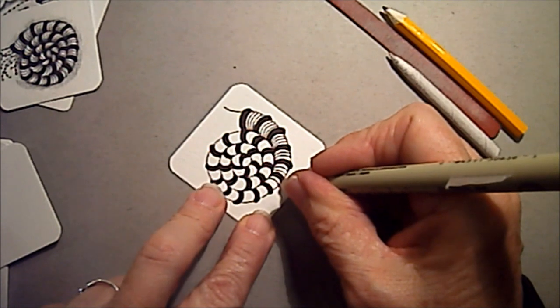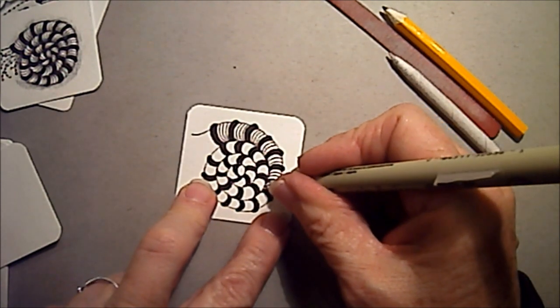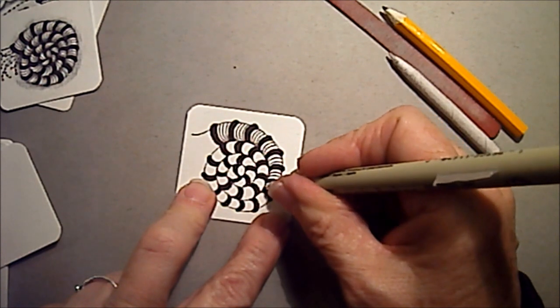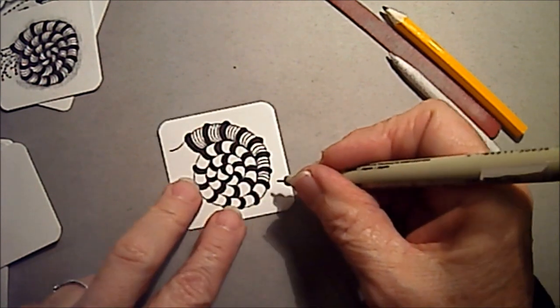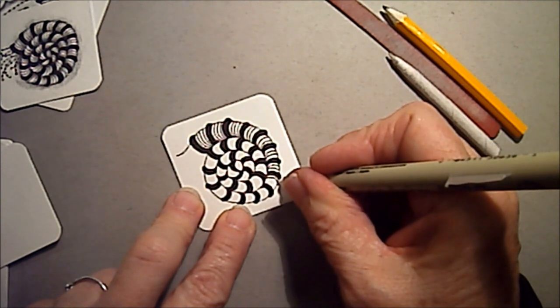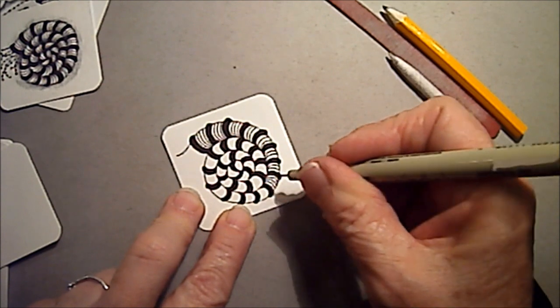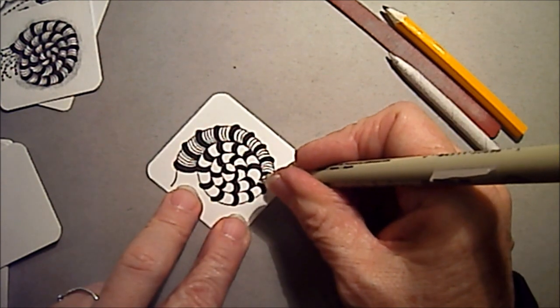You can see I rotate my tile, and I can keep my pen in one spot. I also rest my pen, my hand, on the tabletop. That helps me control a little bit better.